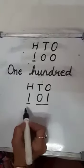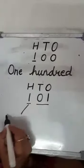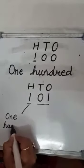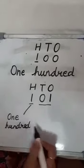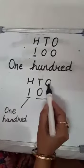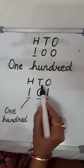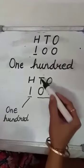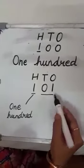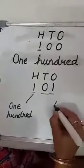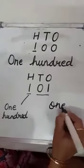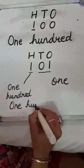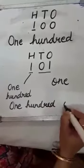For the number 101, under the 100s place there is 1, so we write one hundred. Under the 10s place we have 0, and under the 1s place we have 1, so this part is 1. The number name will be one hundred and one.